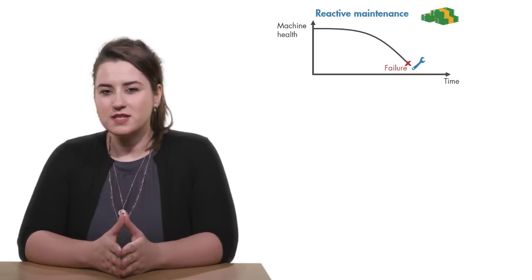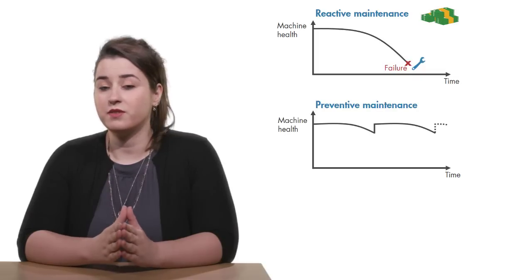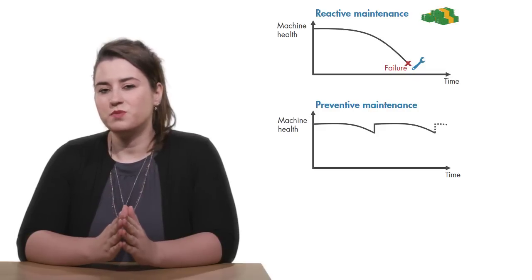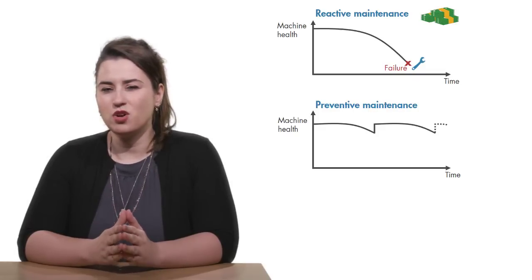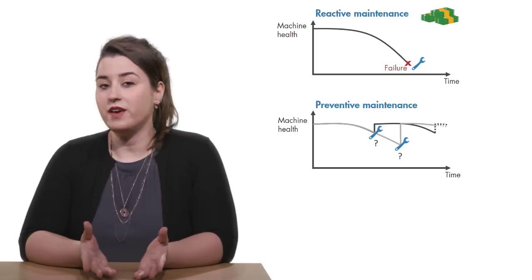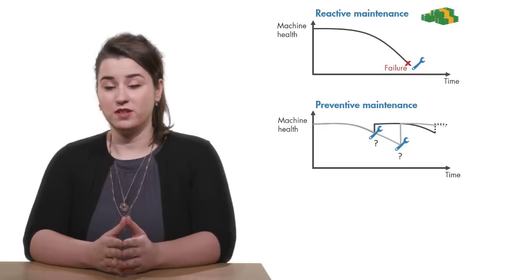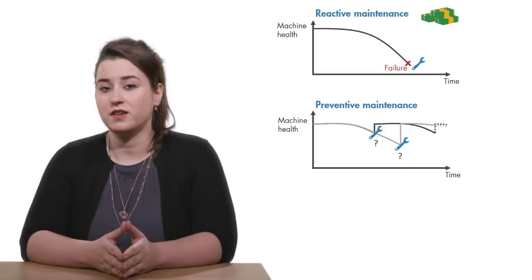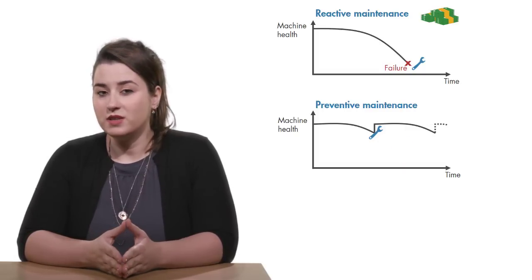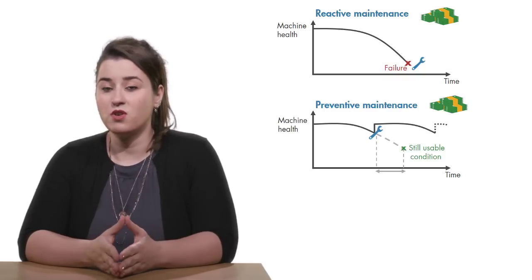That's why many organizations try to prevent failure before it occurs by performing regular checks on their equipment. One big challenge with preventive maintenance is determining when to do maintenance. Since you don't know when failure will occur, you have to be conservative in your planning, especially if you're operating safety critical equipment. But by scheduling maintenance very early, you're wasting machine life that is still usable, and this adds to your costs.